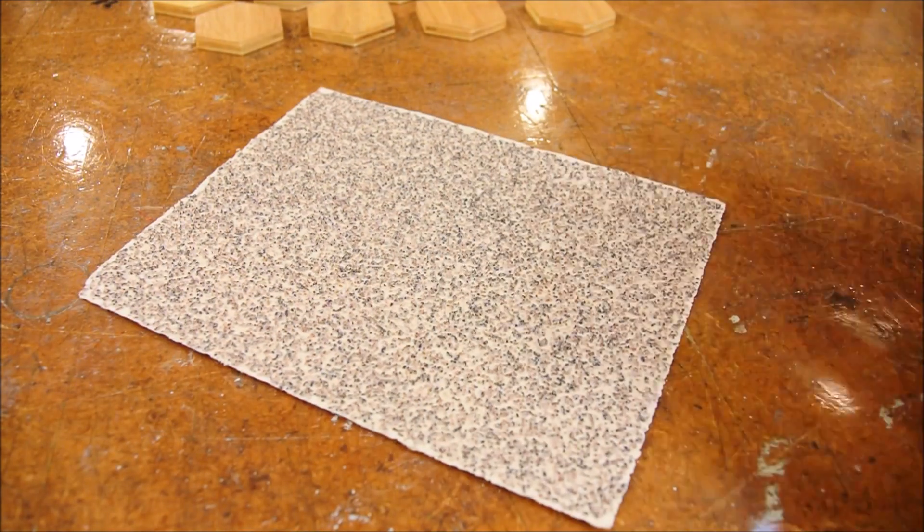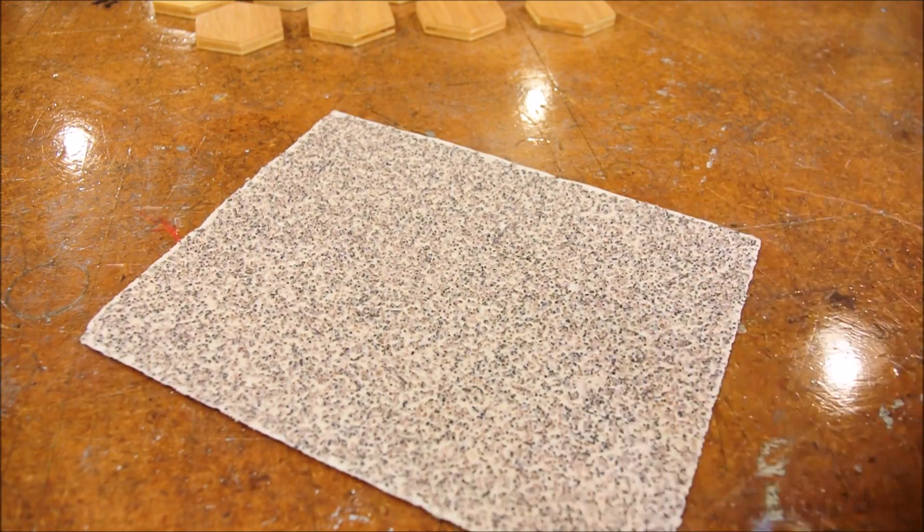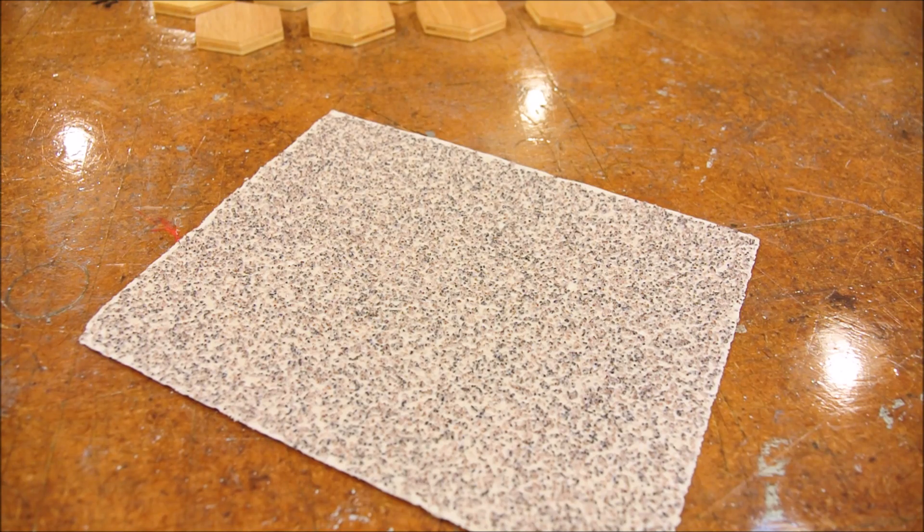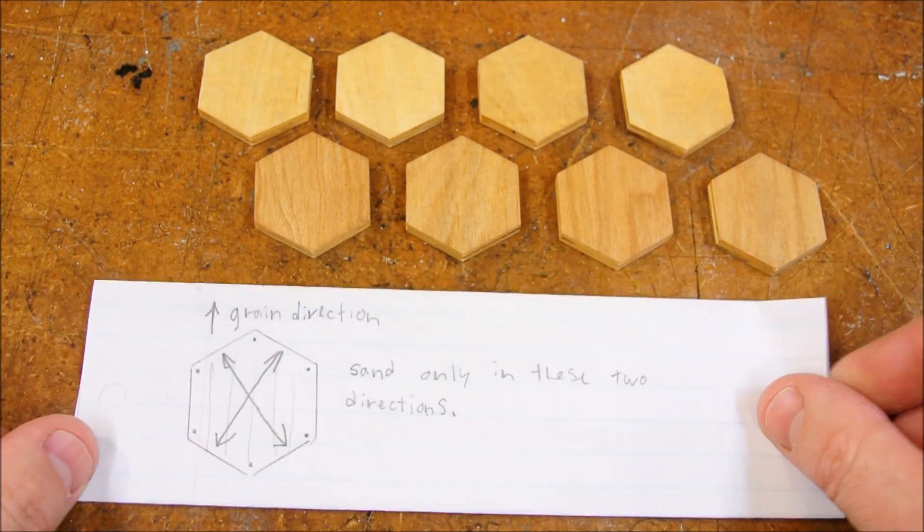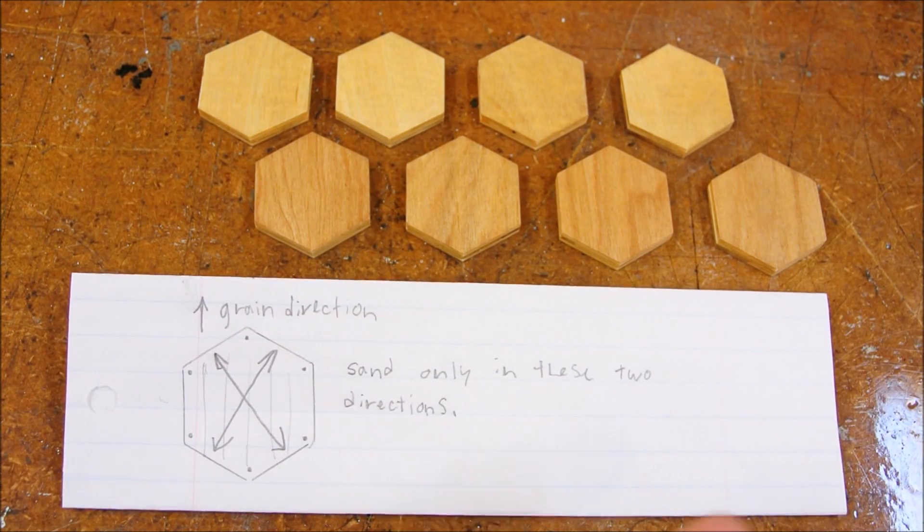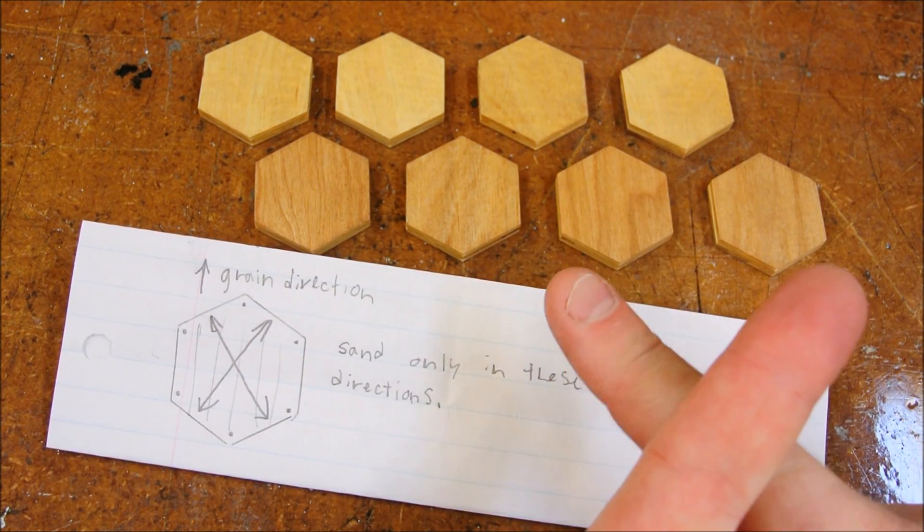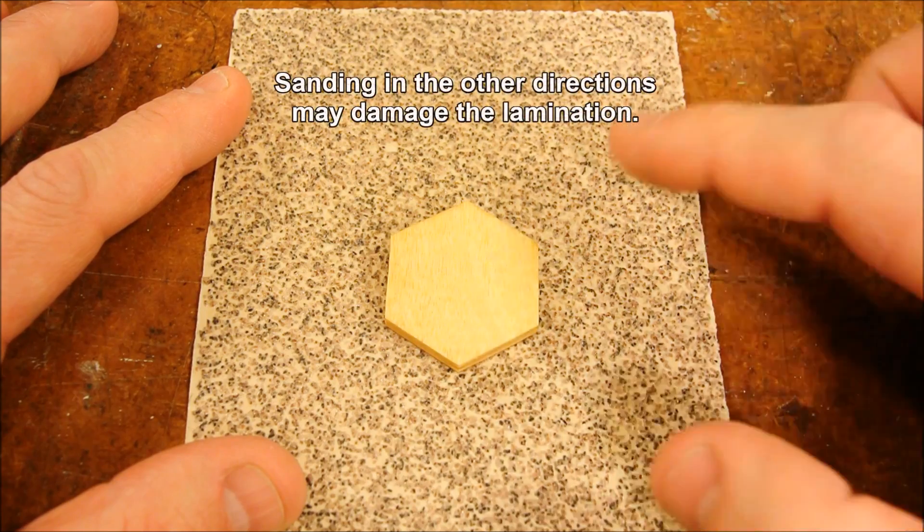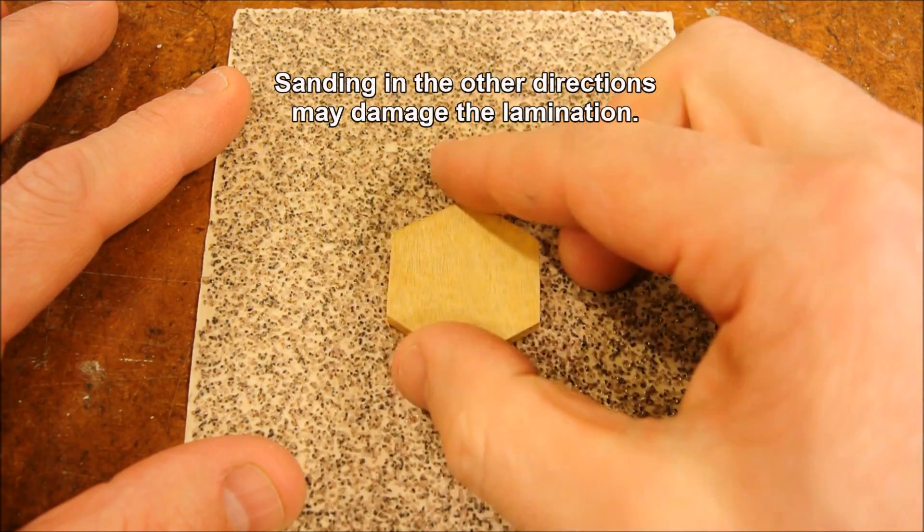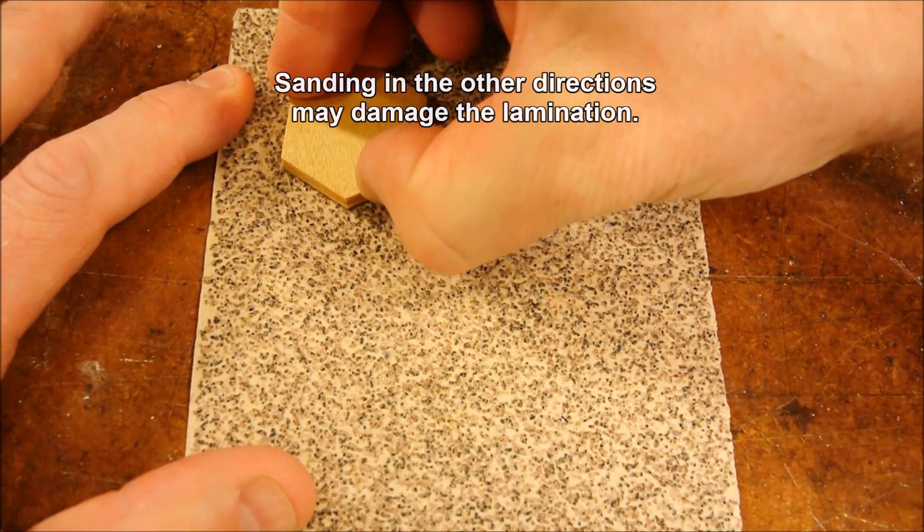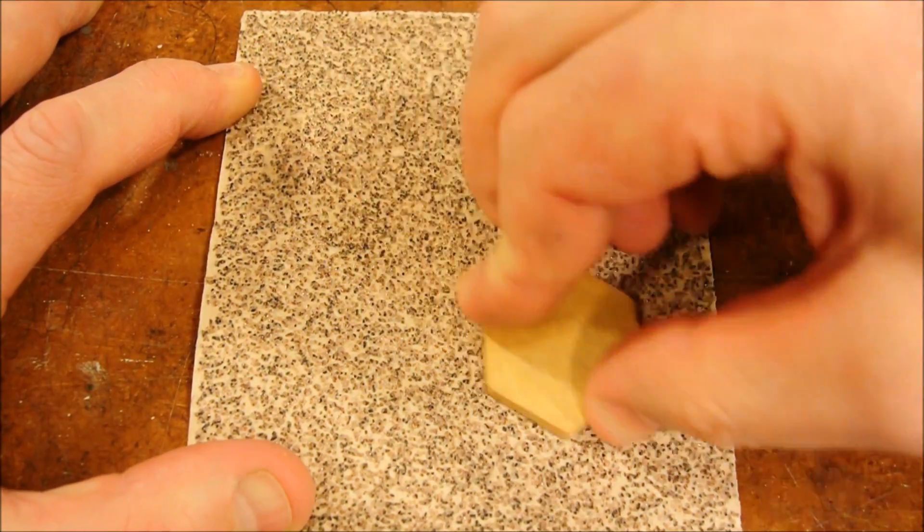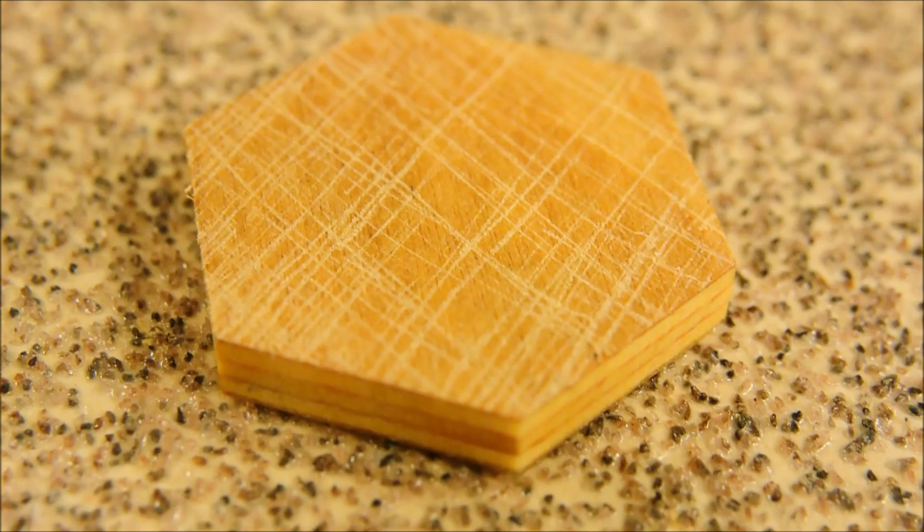First, a piece of 40 grit sandpaper. That's super aggressive. Take a look at it up close. And a note on grain direction. We only want to sand the piece this way and this way. That means that since my plywood grain is running in this direction, I want to sand it like this and like this. That easy. On to the drill press.